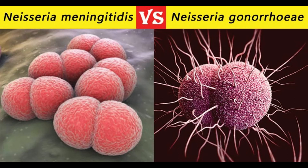Neisseria meningitidis vs. Neisseria gonorrhoeae: 32 differences. Neisseria meningitidis and Neisseria gonorrhoeae are obligate human pathogens that cause distinctly different disease syndromes. They are both gram-negative diplococci, non-sporing, oxidase-positive, and difficult to differentiate on morphological and cultural characteristics.